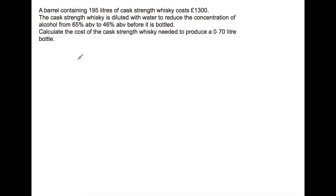So this one has a few more parts to it. So you have a barrel and it contains 195 liters of cask strength whiskey which costs £1300. It says the cask strength whiskey is diluted with water to reduce the concentration from 65% alcohol to 46% before they bottle it, and you need to find the cost of the cask strength whiskey that you would need to produce a 0.7 liter bottle.